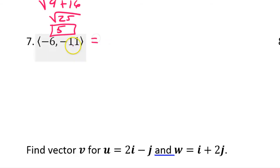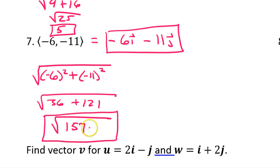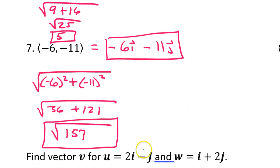Number 7. Unit vector form would be negative 6i minus 11j. Magnitude would be the square root of negative 6 squared plus negative 11 squared. That's the square root of 36 plus 121. That is the square root of 157.